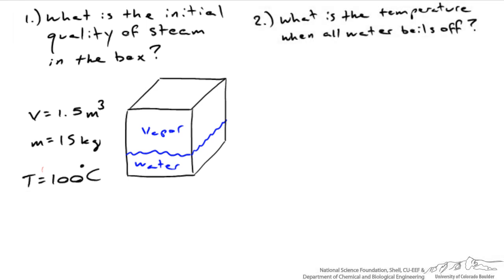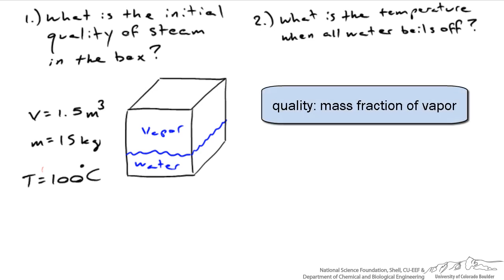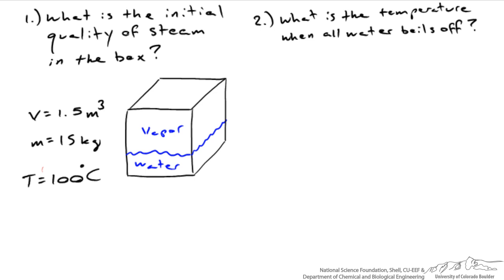To answer this you first need to understand what quality means. It simply means what fraction of the mass within this box consists of vapor. A quality of 100% would mean the box was entirely comprised of steam or water vapor. If the quality was zero, the box is completely filled with liquid water. If the quality was 50%, half of the mass would be vapor and half would be water. That does not mean the box would be half full of water and half full of vapor. Because water is so much more dense than vapor, you might only see a small puddle of water on the bottom and that's still a quality of 50%.